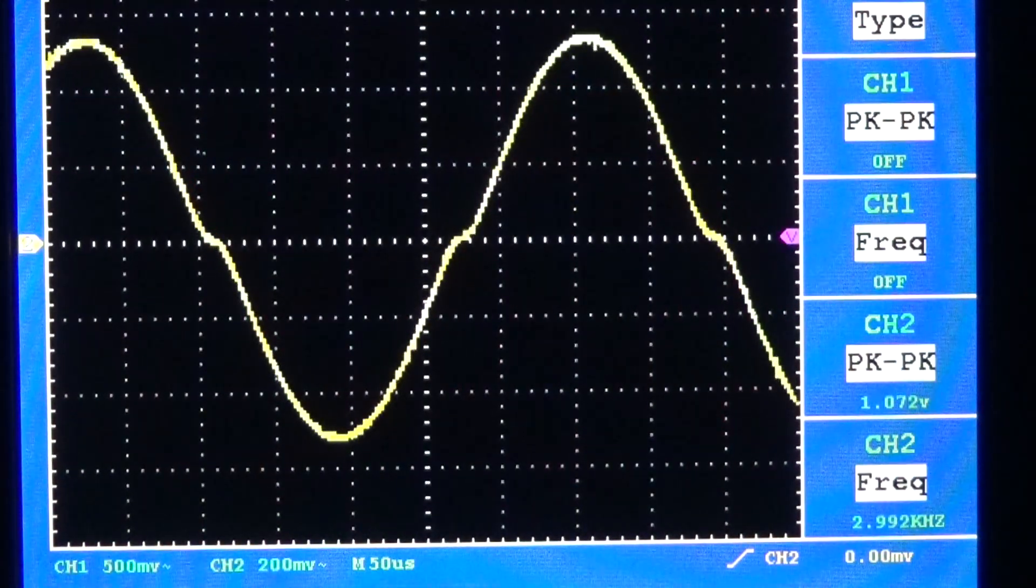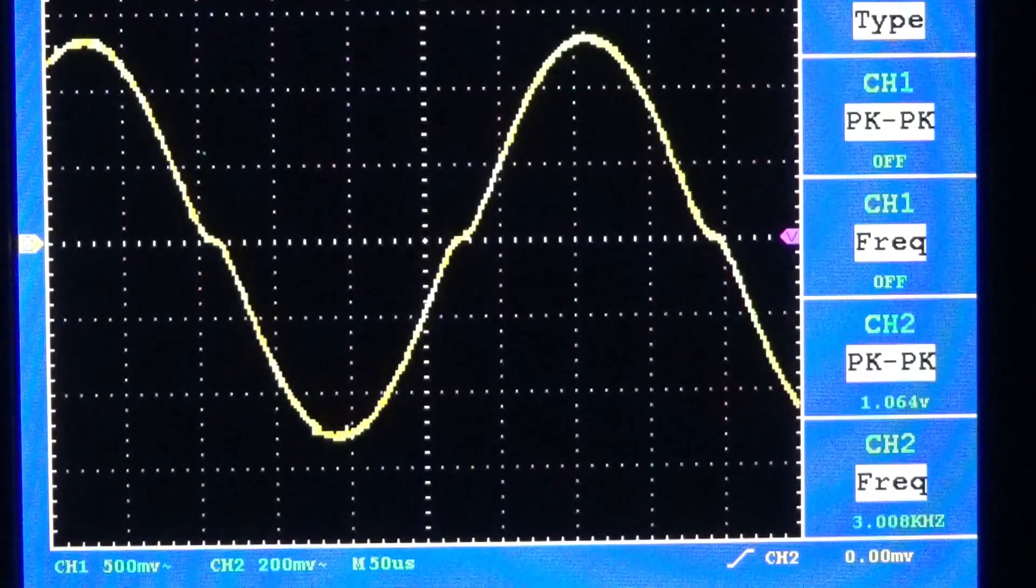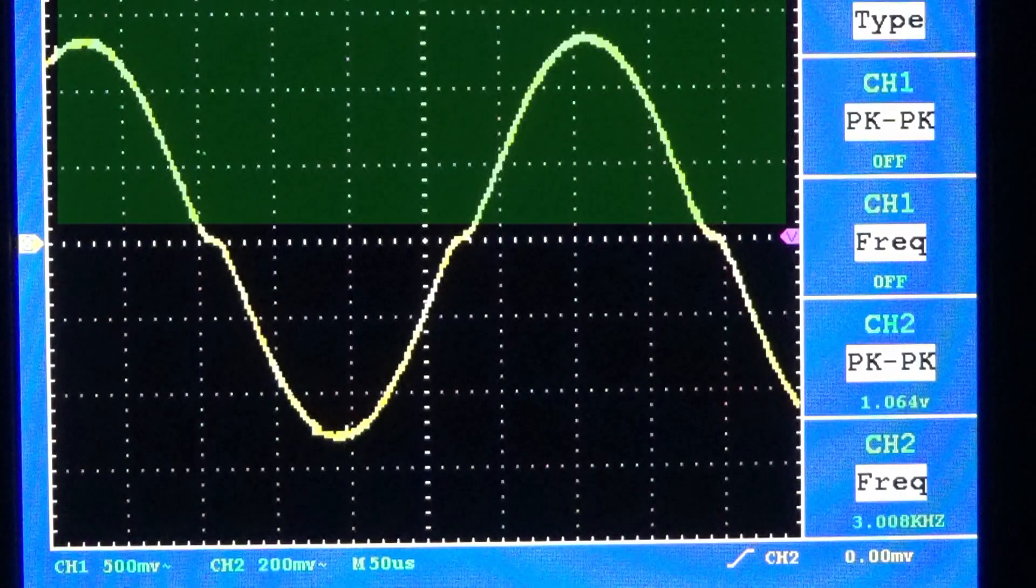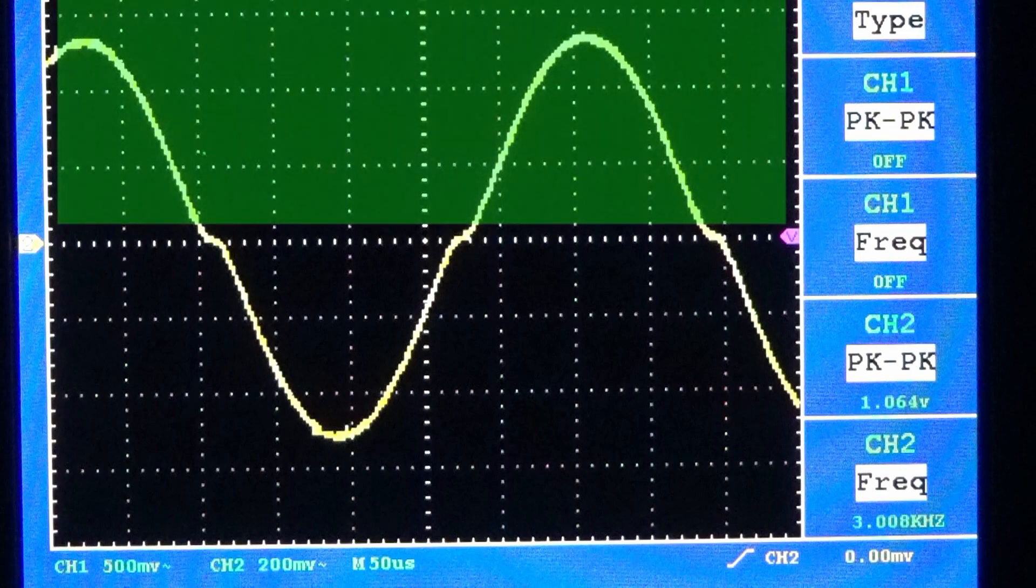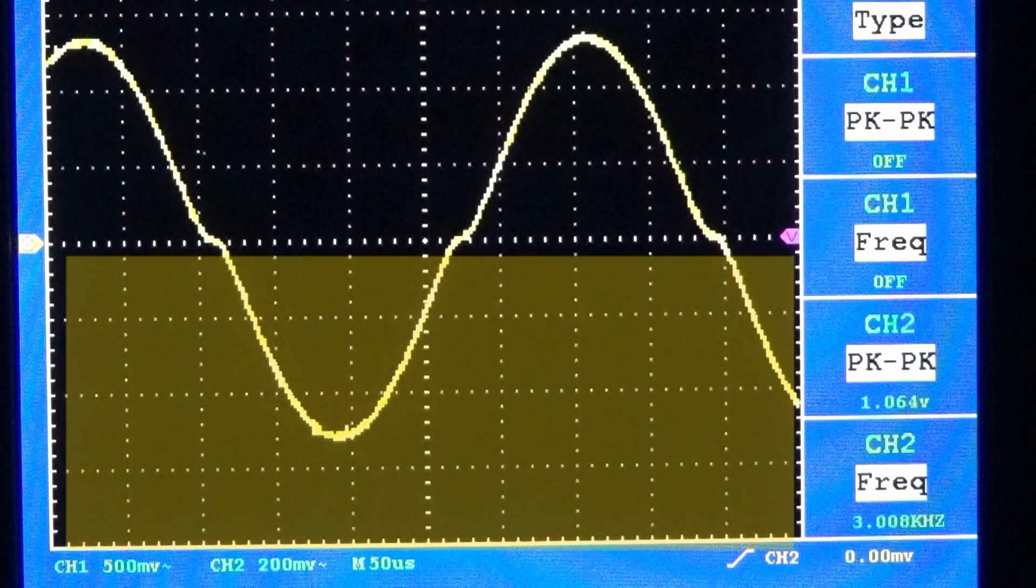There are two transistors in a class AB amplifier. The NPN transistor in the output stage is responsible for driving the positive waveform and the PNP transistor is responsible for driving the negative.